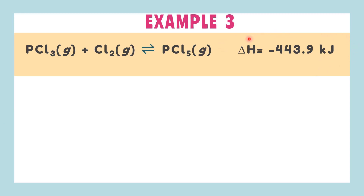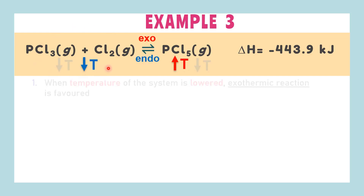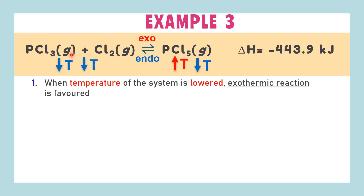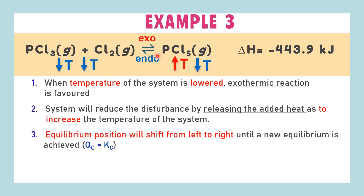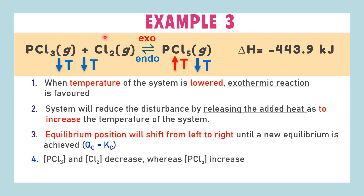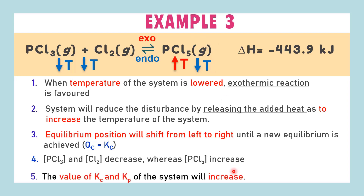For the example where delta H is negative, forward reactions favour exothermic where heat is released, while backward reactions favour endothermic where heat is absorbed. When the temperature of the system is lowered, the forward exothermic reaction is favourable. The system will reduce the effect of disturbance by releasing heat to increase the temperature, so equilibrium positions shift from left to right. This results in more BCl3 and Cl2 being consumed whereas more BCl5 is formed, leading to an increase in Kp or Kc value.